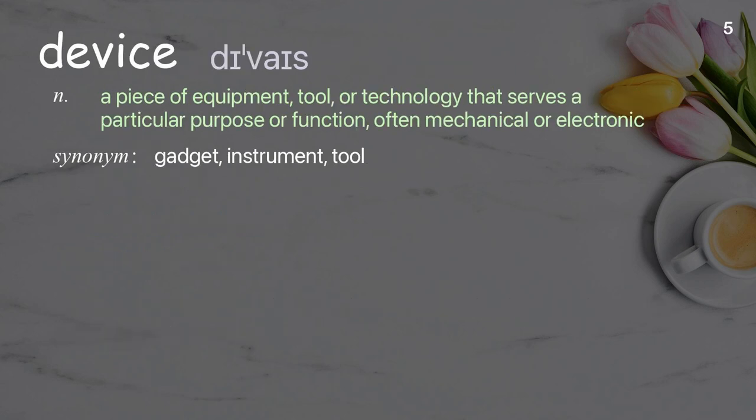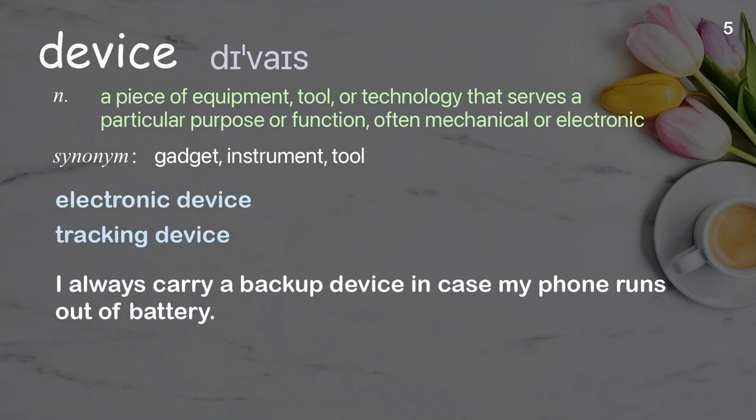Device: a piece of equipment, tool, or technology that serves a particular purpose or function, often mechanical or electronic. Examples: electronic device, tracking device. I always carry a backup device in case my phone runs out of battery.